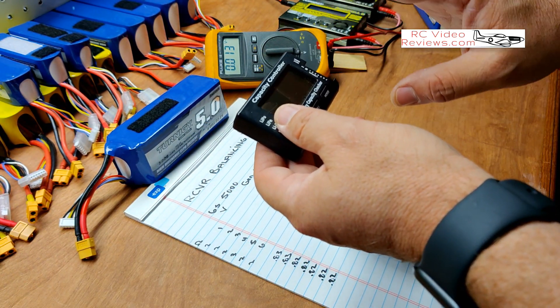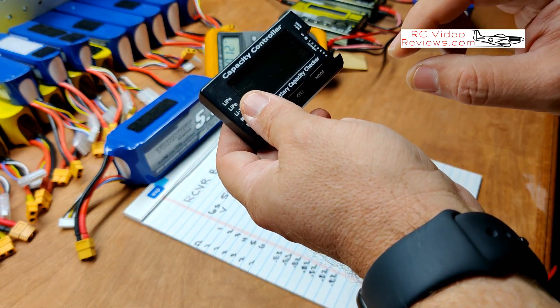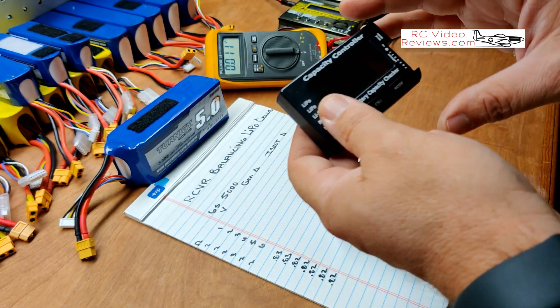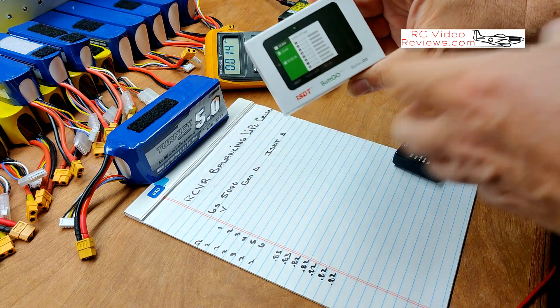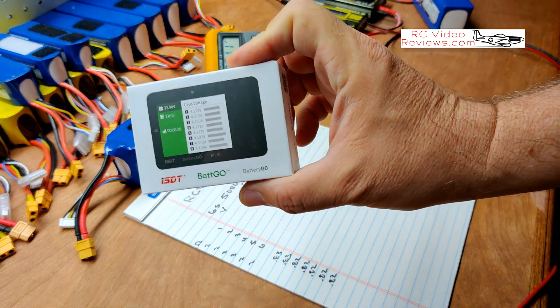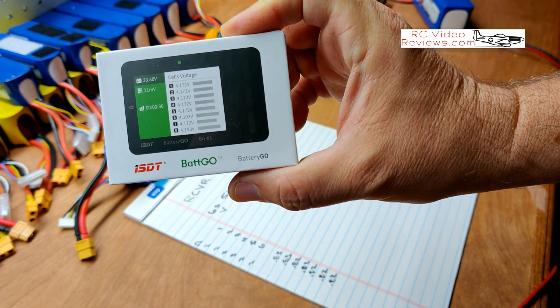So at any rate, there are a couple of things that I've done. One, I went out and bought a little bit of a higher end. This is an ISDT BattGo checker. So this is a balancer and a cell checker. And I guess this has a balance function which will help bring the cells down at the end of a flight.